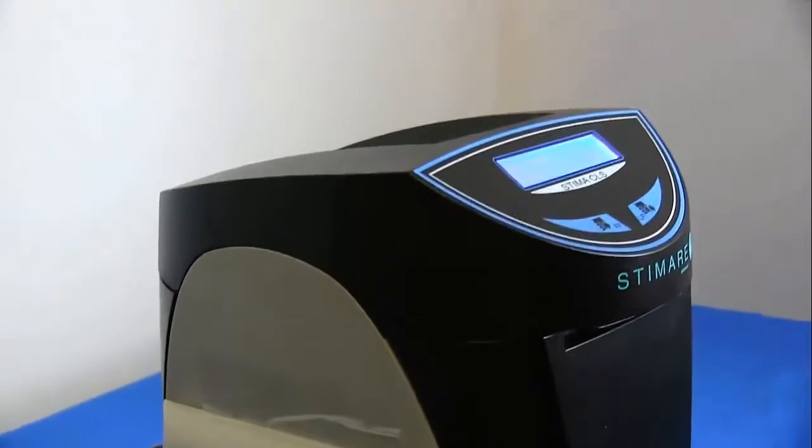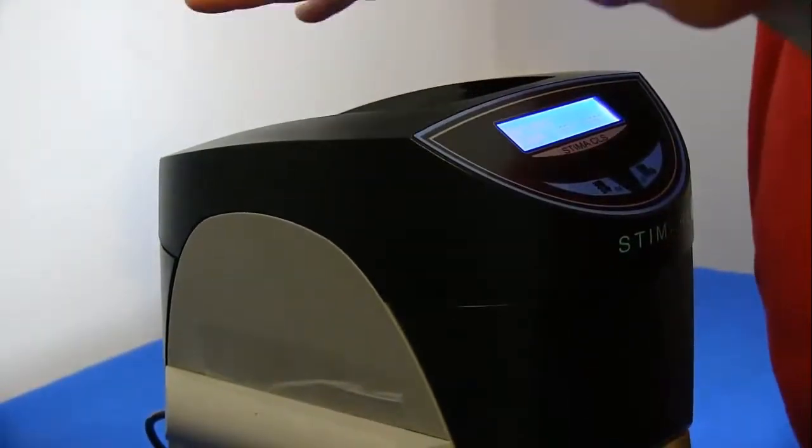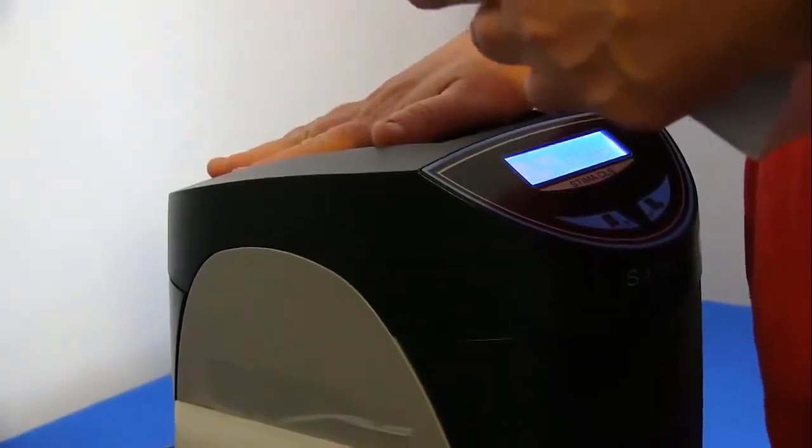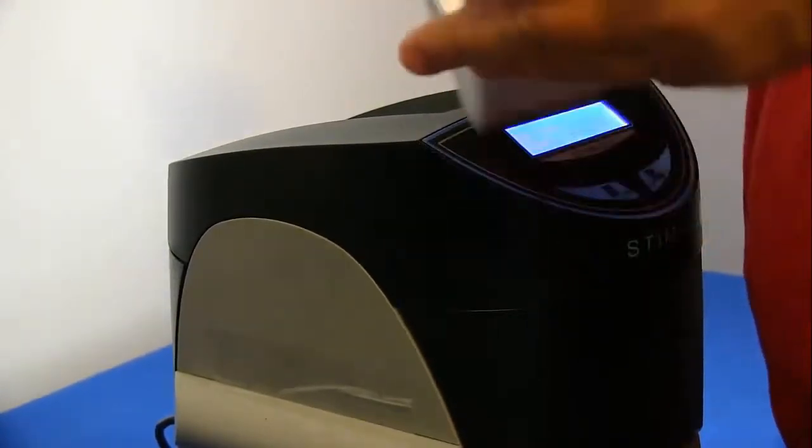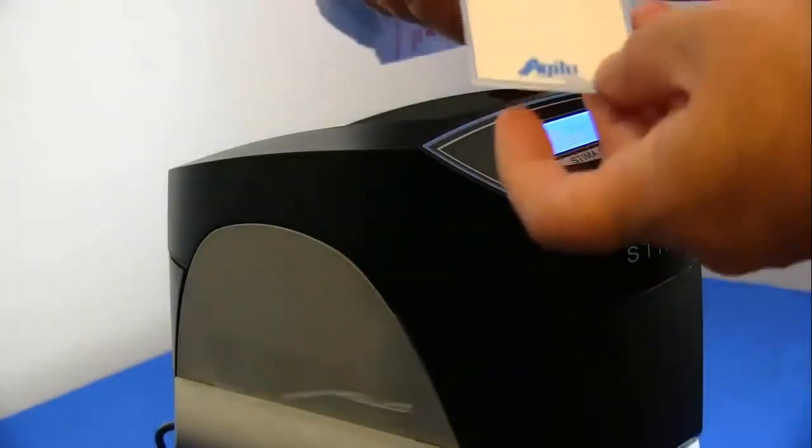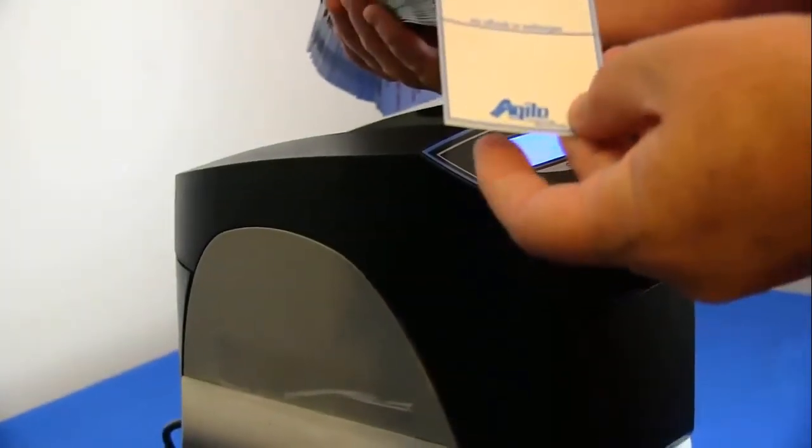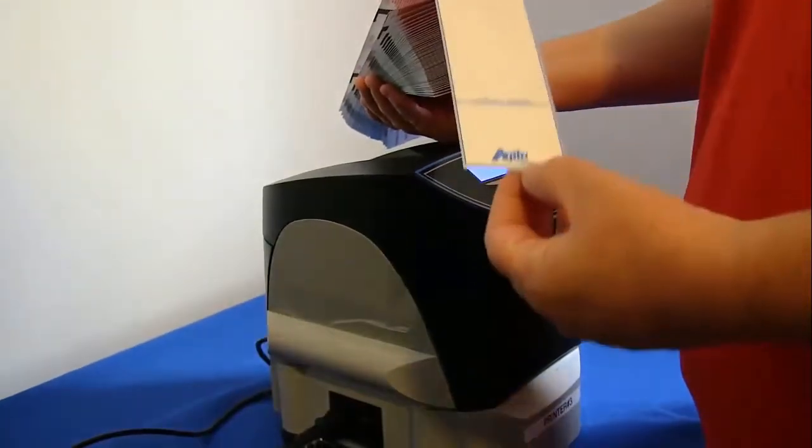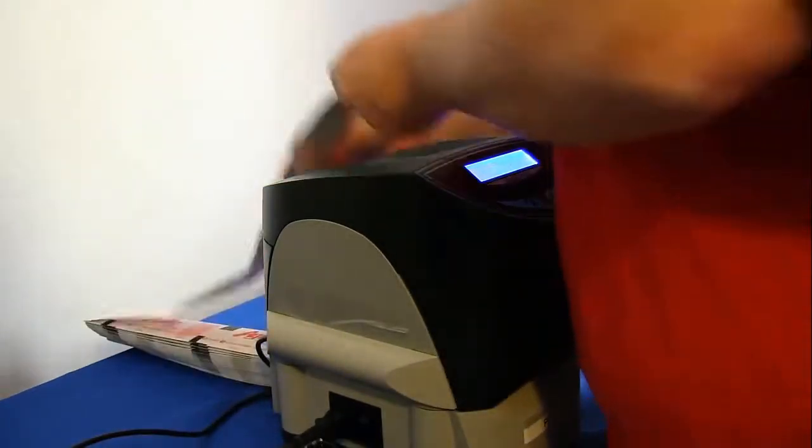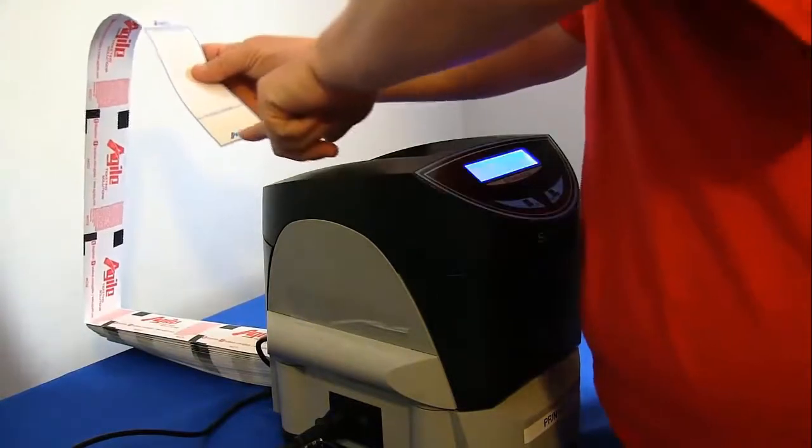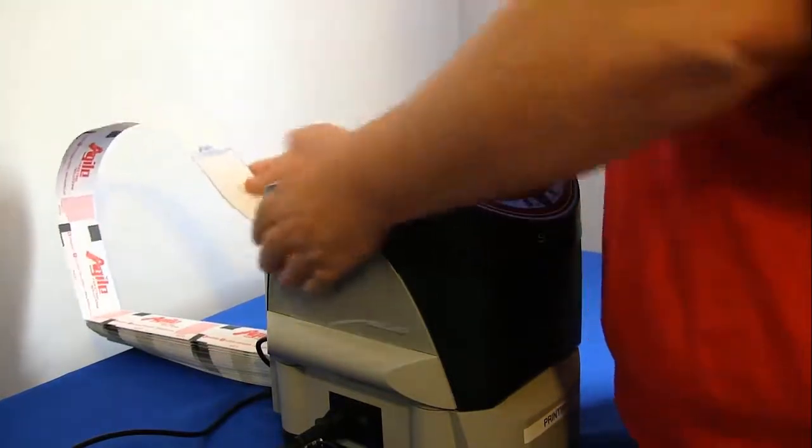And then we're going to load the ticket printer with ticket stock. Now when you get your ticket stock, most of them are going to have a short stub here. And as you can see, the Agile logo is at the very end. And this is how we want to feed the ticket printer with the Agile logo facing the back of the ticket printer.